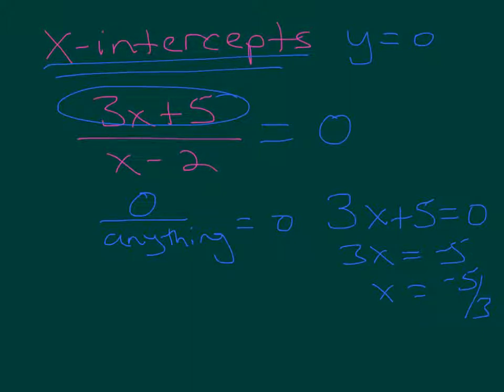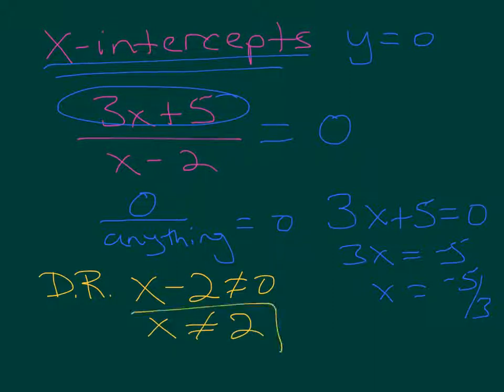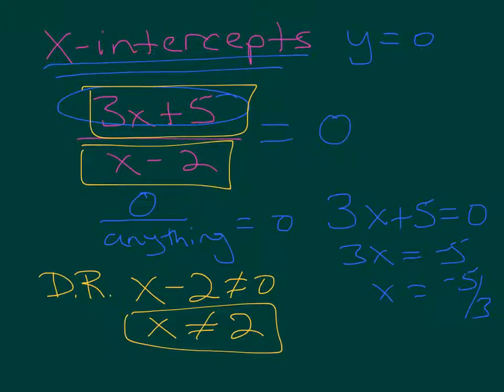And let's talk about the domain restriction. So x minus 2 cannot equal zero, so x cannot equal positive 2. So far, we know how to set our denominator equal to zero to find our domain restrictions and also the vertical asymptotes. And then I'm going to set the numerator equal to zero to find my x-intercepts.